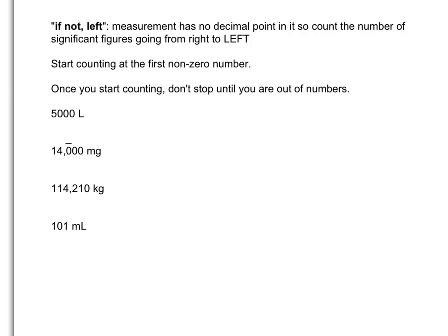With the measurement 5,000 liters, we have no decimal point, so we're going to count to the left. The first number is a zero, the second number is a zero, and the third number is a zero — so we skip all those. That leaves the five, and that's one significant figure.